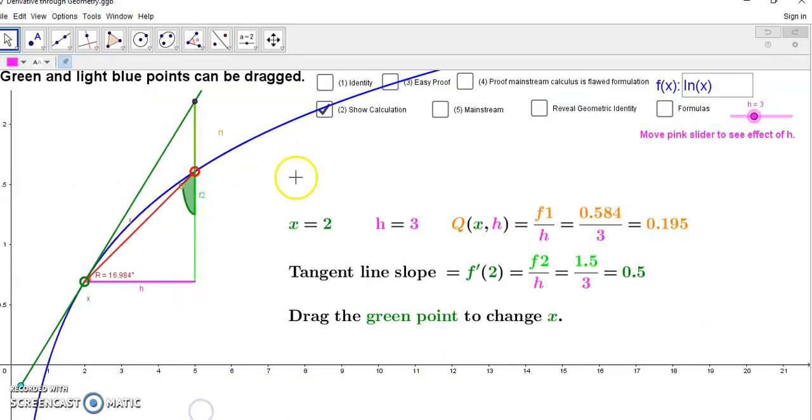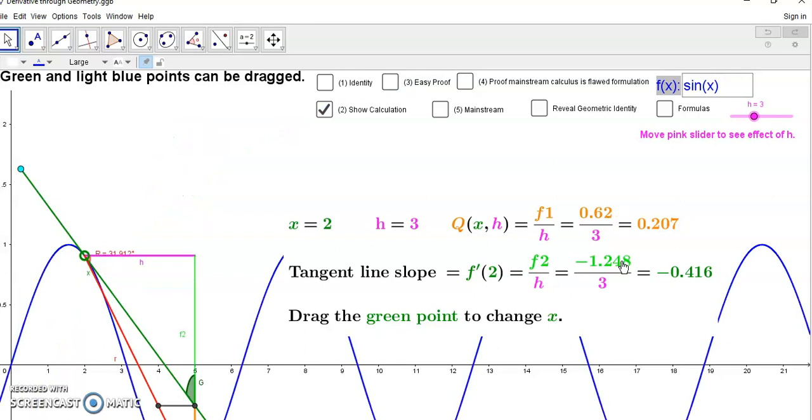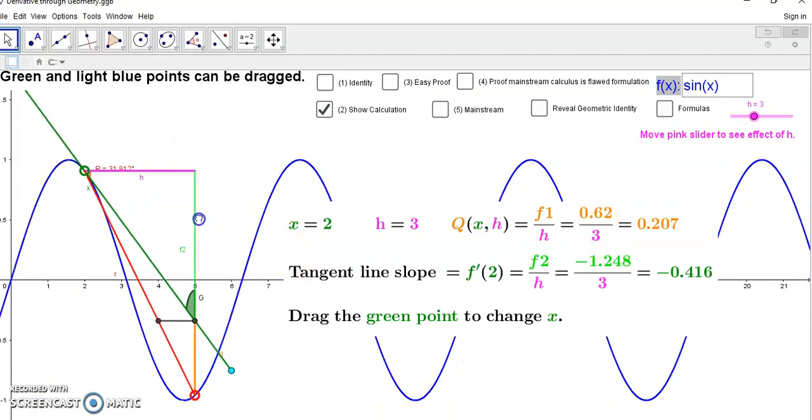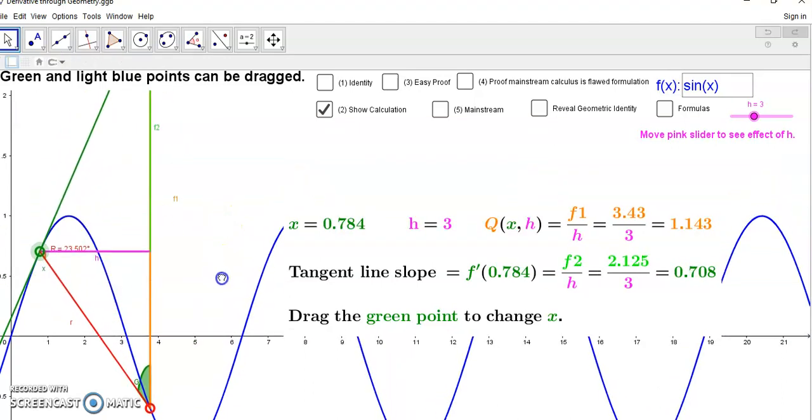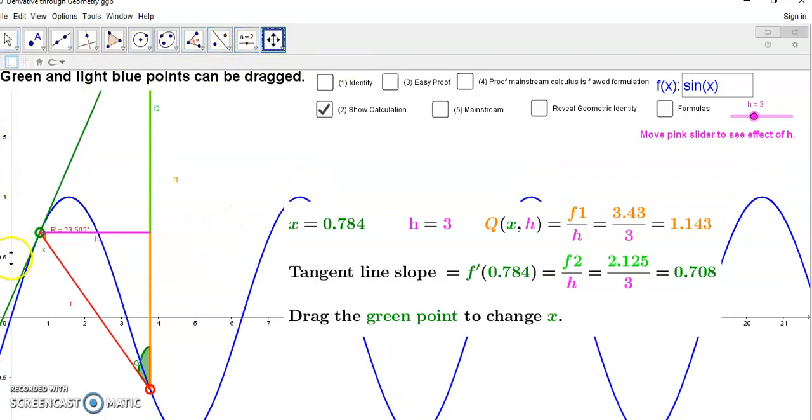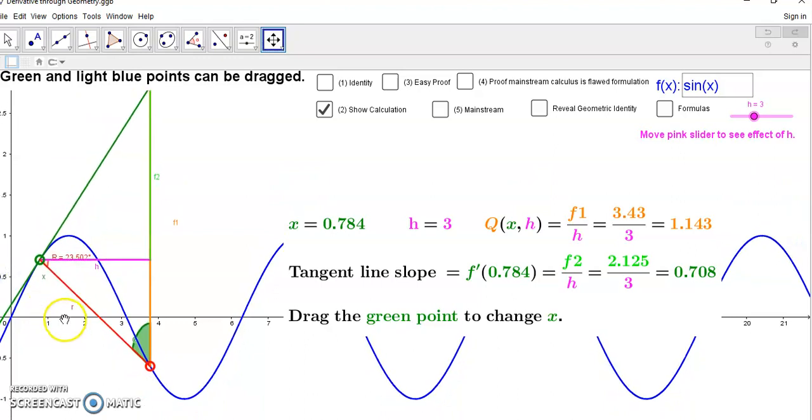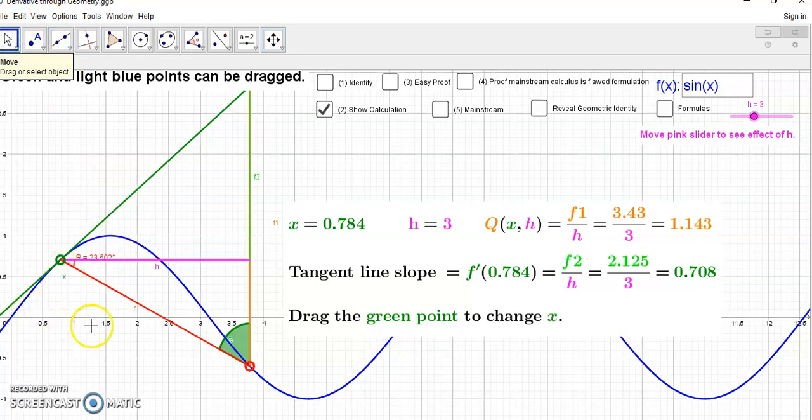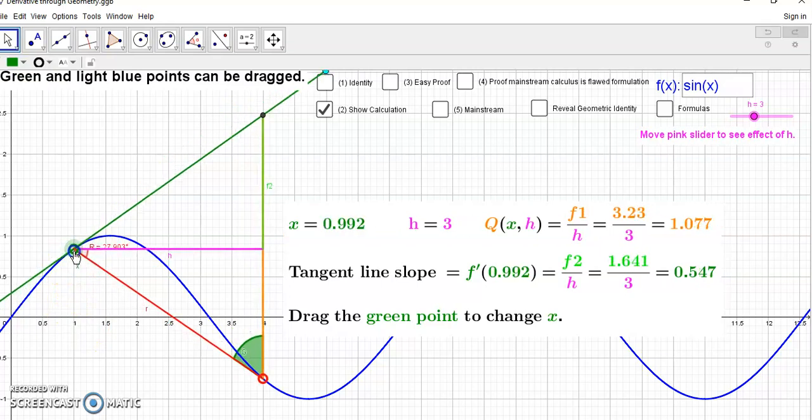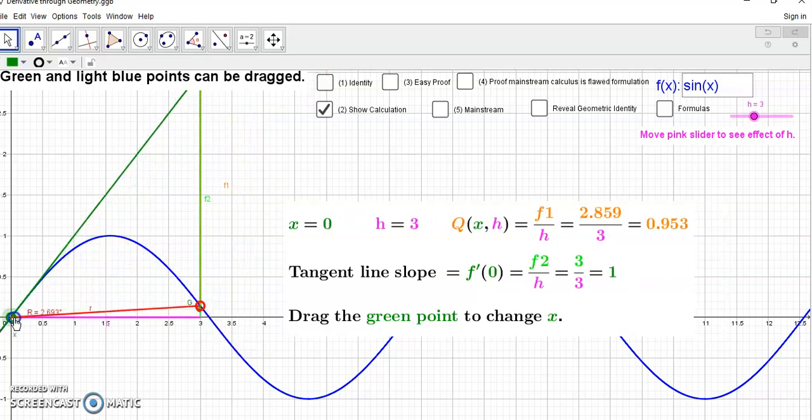Shall we do one more then? How about a trigonometric function - sine of x? Let's just bring this up a little bit and let's bring this down to one. Let's put the grid in so we can see what we're doing. We want x to be at one, but let's put it at zero, that's probably easier.